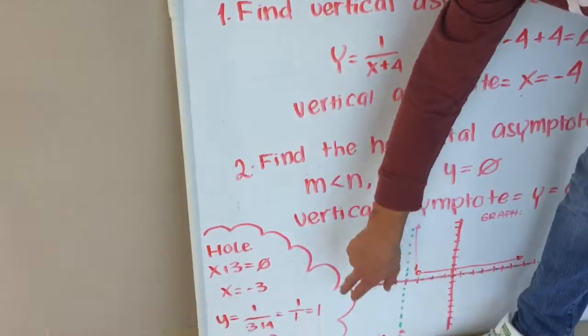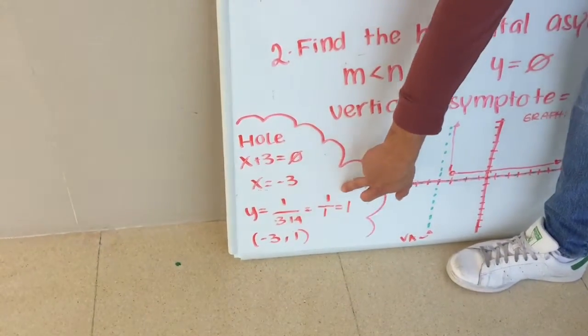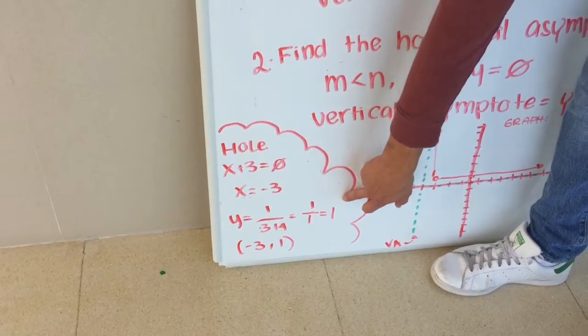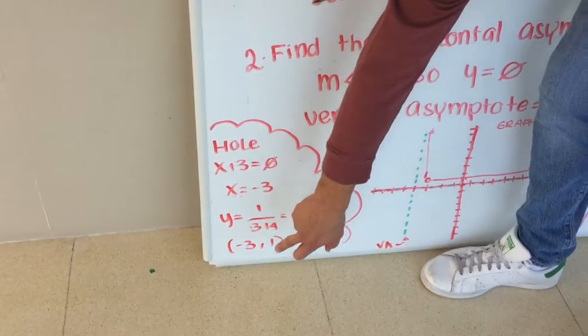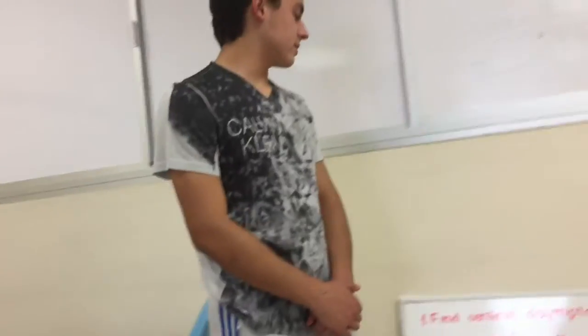Now that we have the hole, we get x equals negative 3. We have to substitute it to here. If we get 1 over 1, then it's 1. So we get negative 3 comma 1.